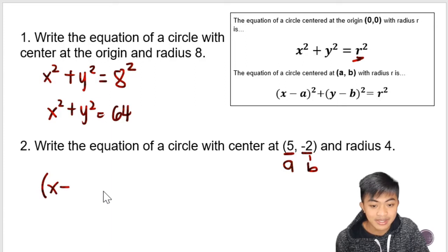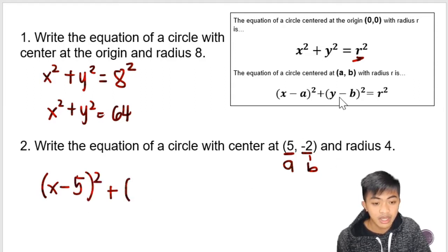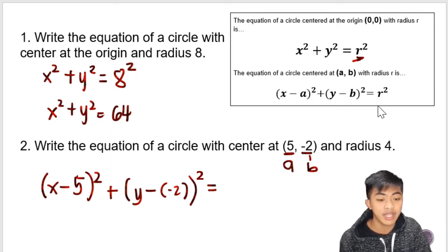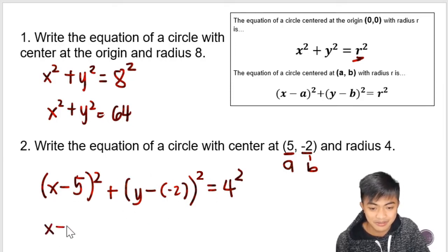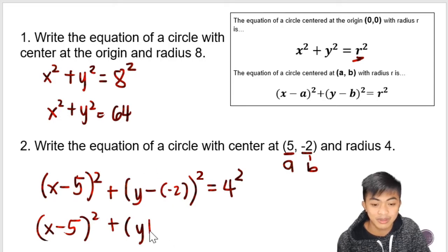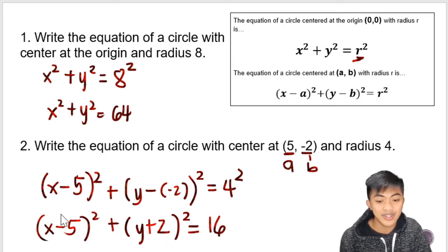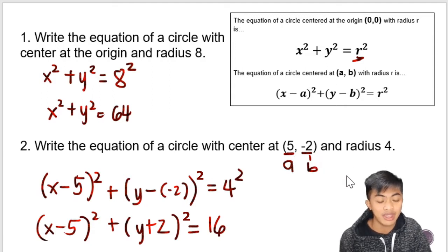So x minus a — instead of a, we replace it with 5 — plus y minus b. But b here is negative 2. Is equal to — instead of r, since the radius is given as 4, we copy 4 in place of r. Now let's simplify because it looks messy. Negative times negative is positive, so we get y plus 2. And 4 squared is 16. So the equation of the circle with center at (5, negative 2) and radius 4 is now looking neat and clean.